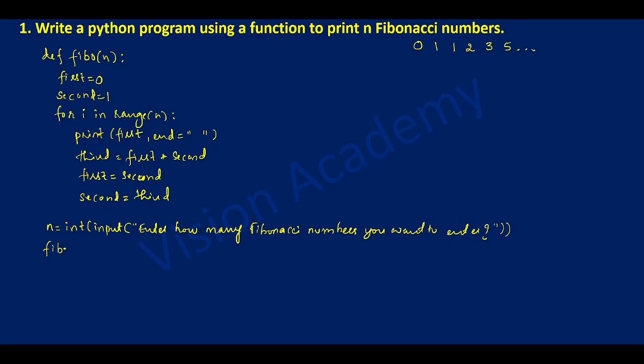Now it's time to call this particular function by its name. I'm going to write fibo, and inside the bracket I'll pass n as the argument.